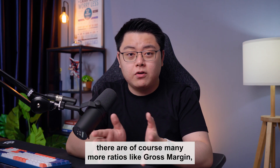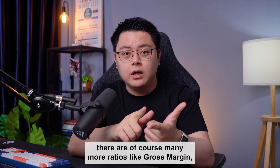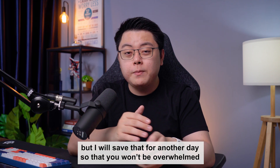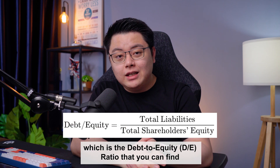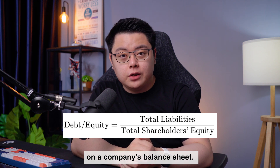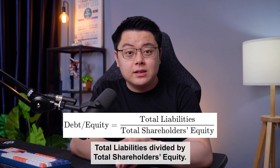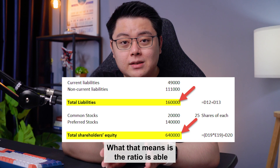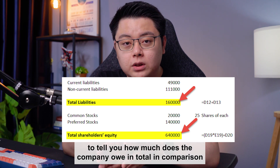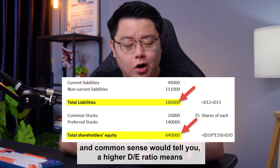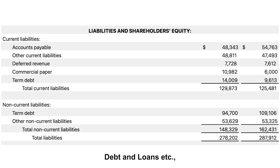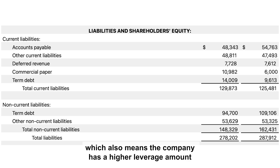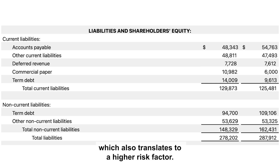Anyways, that's it for the P&L statement. There are of course many more ratios like gross margin, operating margin, and EV/EBITDA, which are all important as well, but I'll save those for another day. So let's look at the third financial ratio: the debt to equity DE ratio, which you can find on the company's balance sheet. The DE ratio is calculated with the formula of total liabilities divided by total shareholders' equity, telling you how much the company owes in total compared to how much the company's shareholders own.